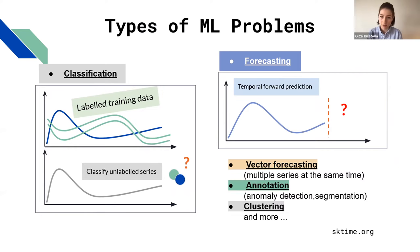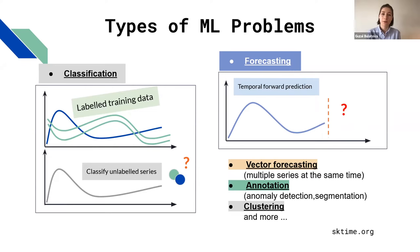To predict future sales revenue, we solve a forecasting problem. We train a model on available values and make a temporal forward prediction on a forecasting horizon. There are also many other machine learning problems solvable with time series data: vector forecasting, annotation, clustering, and many more.